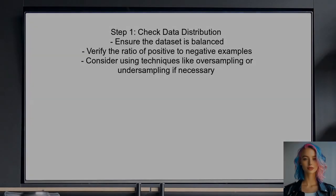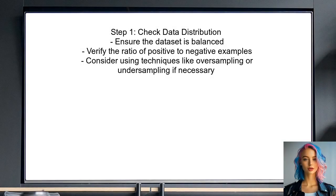To address the issue of the neural network converging to zero output, the user should first check the data distribution in the new data set. It's important to ensure that the data set is balanced and that there are enough positive examples for the network to learn from.